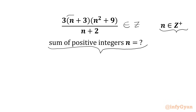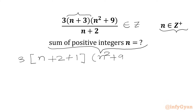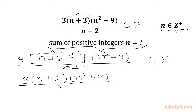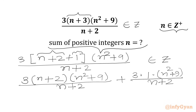Let's get started on the solution by splitting n+3. We can write 3 times (n+3) as (n+2)+1. Then we have (n²+9) over (n+2) as an integer. We will split using (n+2)+1 times (n²+9), expanding to get 3 times (n+2) times (n²+9) over (n+2) plus 3 times 1 times (n²+9) over (n+2) is an integer.